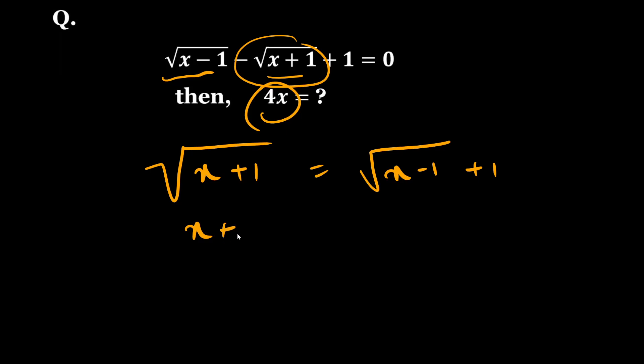then I will get x plus 1 equal to x minus 1 plus 1 plus 2 root under x minus 1. Now here I can cancel out this and this will also be gone, so from here